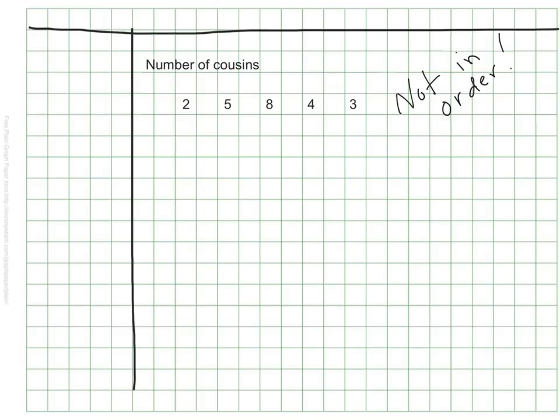The first thing we should notice is that these numbers are not in order. That's going to be a problem because the median marks the middle of an ordered set of data. It needs to be either from least to greatest or greatest to least. I'm going to rewrite these numbers in order.